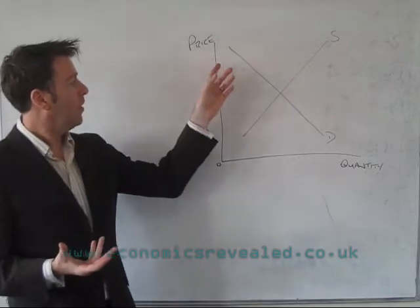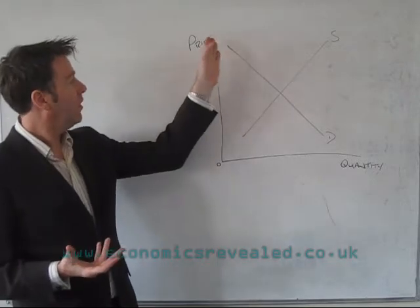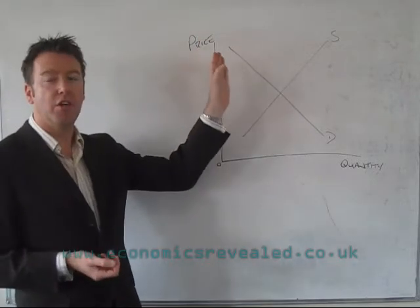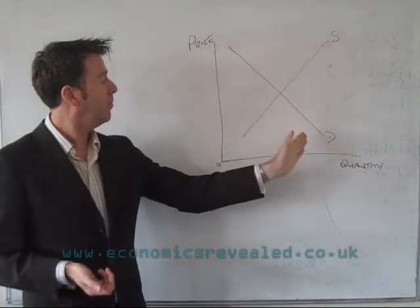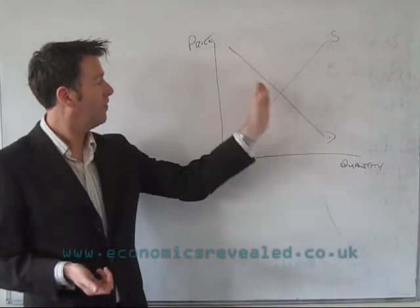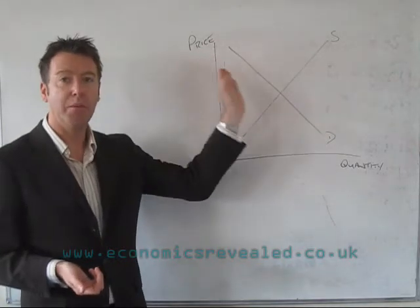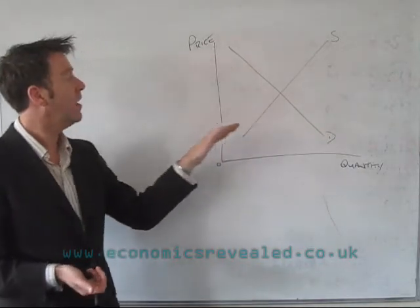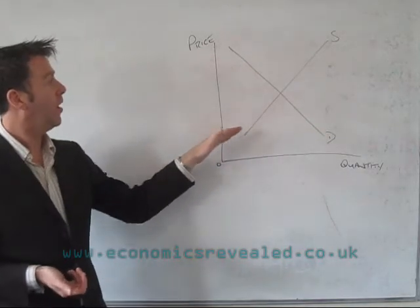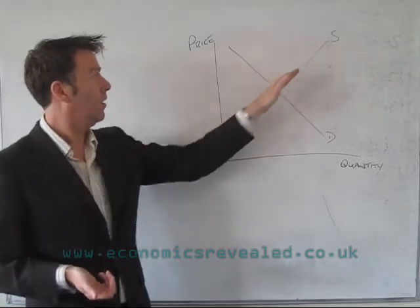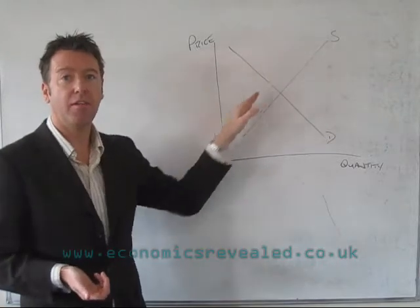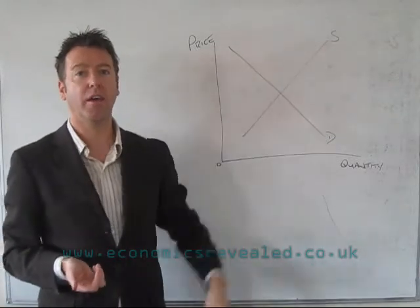So we've got the current situation — this is what the demand curve looks like, sloping down from left to right, and suppliers are willing to supply on the basis of this supply curve.